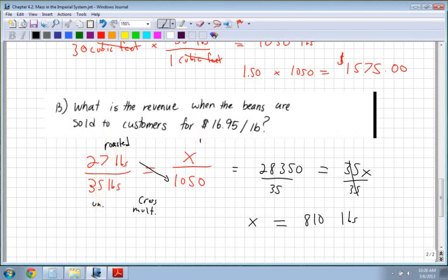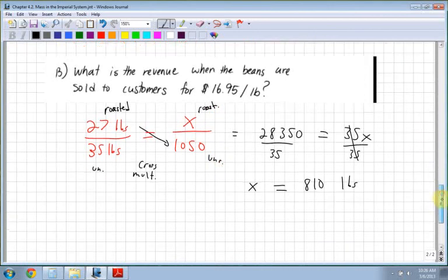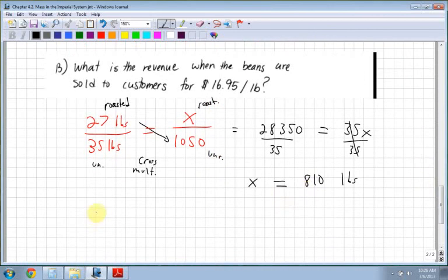So I have roasted on top and unroasted on the bottom. So now 810 pounds is what I have left, and that means I have to figure out what the revenue is.